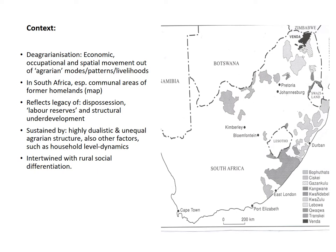The argument in this presentation is that processes of de-agrarianization are intertwined with processes of rural social differentiation, with a recursive relationship where they feed into each other. While there are elements of spatial variation between various contexts in the communal areas, our particular focus here is on rural social differentiation. Rural livelihoods in contemporary South Africa are crucially shaped by labor market linkages and state welfare transfers, and I want to tease these out in a little more detail.